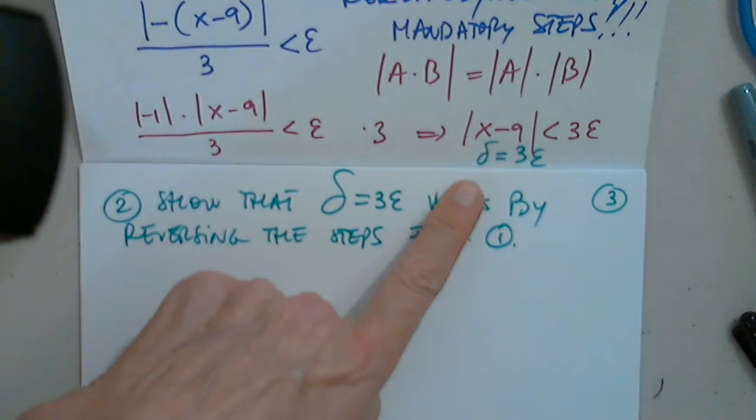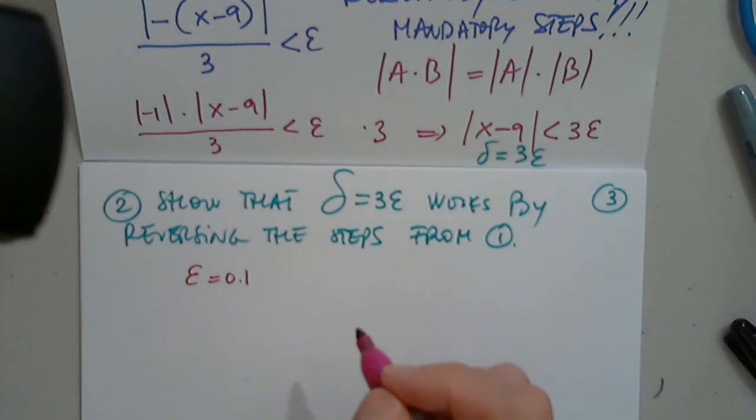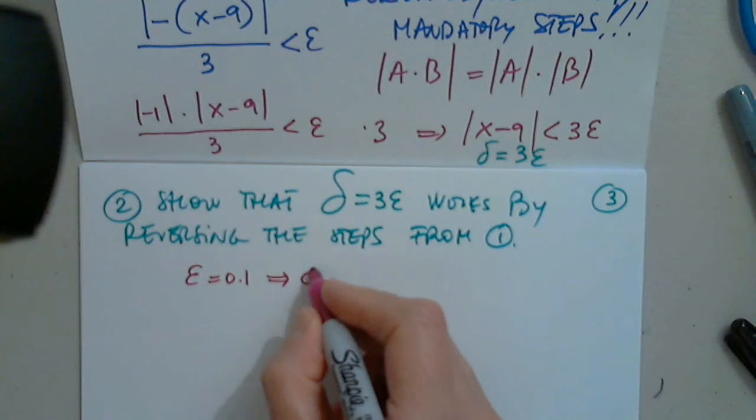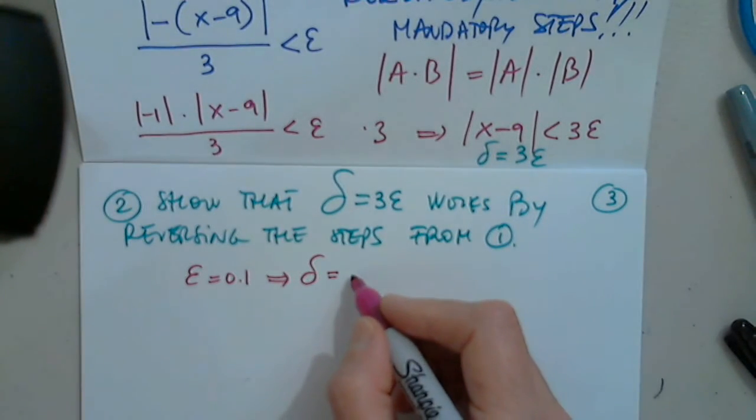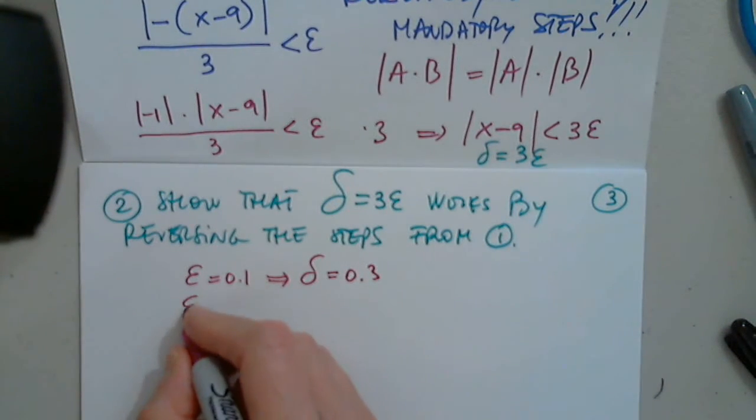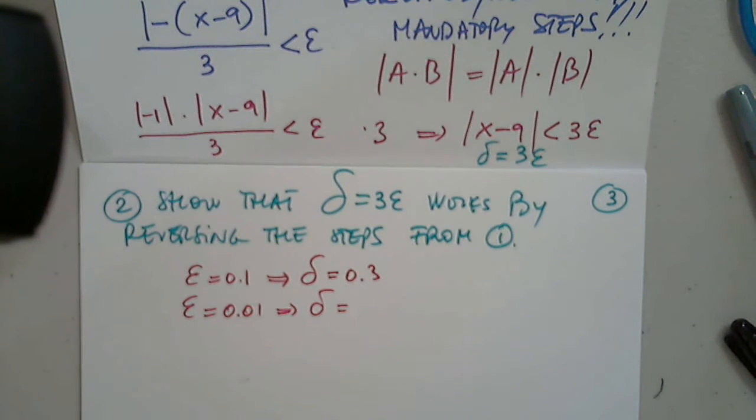So what does this say to us? If you tell me use epsilon 0.1, can you find delta? If epsilon is 0.1, can I find delta? Yeah, multiply it by three, that's it. What if somebody else says no, I want epsilon to be 0.01? Can you give me delta?